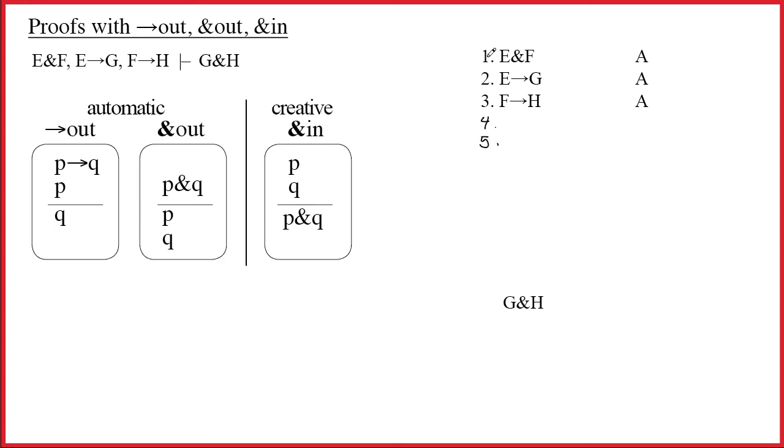You take everything in front of the ampersand and put it on one line. Everything after the ampersand goes on the next line, and the justification for both of these are the same thing. We just cite the line number. It's line number one, and the name of the rule, ampersand out.